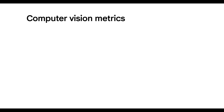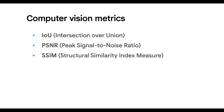For computer vision applications, Metrax provides metrics like intersection over union for semantic segmentation, and both peak signal-to-noise ratio and structural similarity index measure for image quality assessments. Of course, you'll still find those classic metrics like accuracy, precision, recall, F1 score, and more.